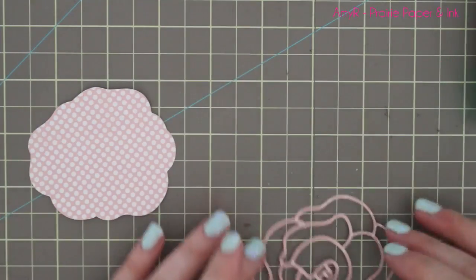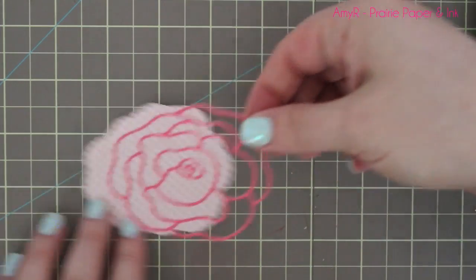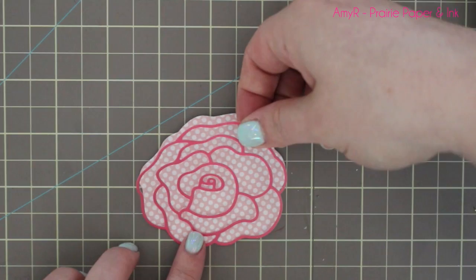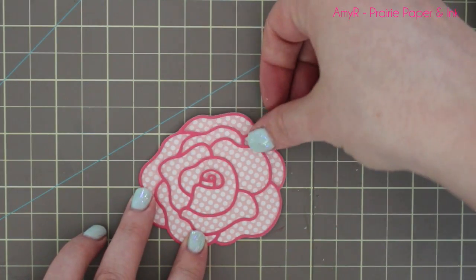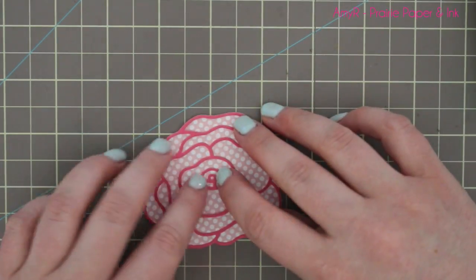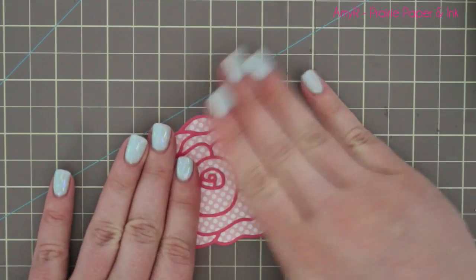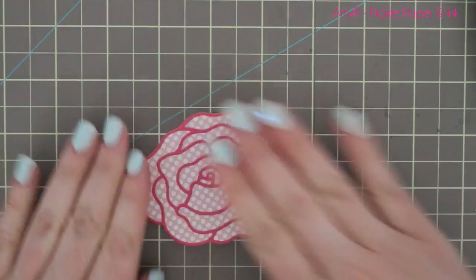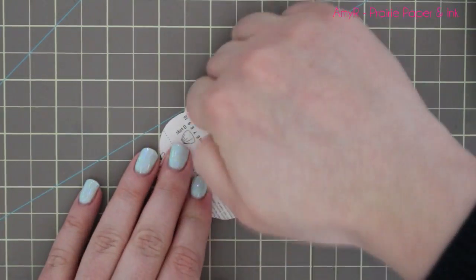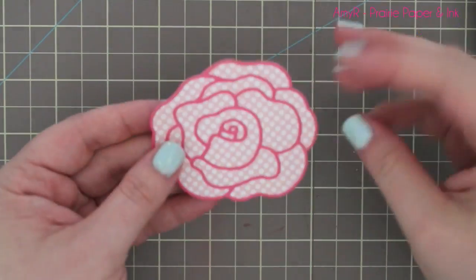Once I've got all my adhesive down, I pick it up and apply from the bottom—I find that's the easiest. Once you've got the shape, it's pretty easy to determine which goes where. Start from the bottom, press it all down, and then I flip it over and give it a good rub with my hands to make sure everything's adhered.